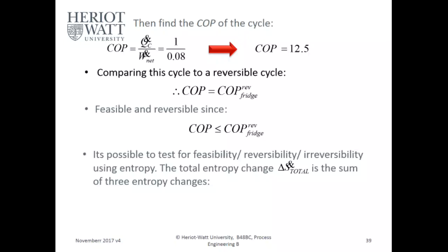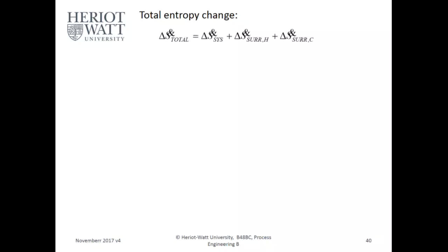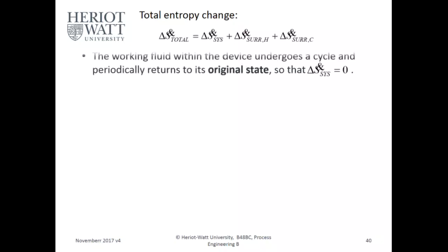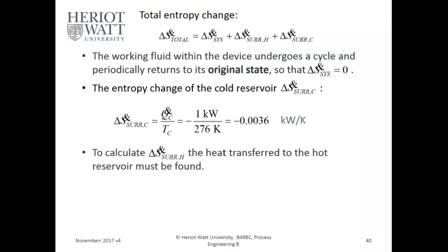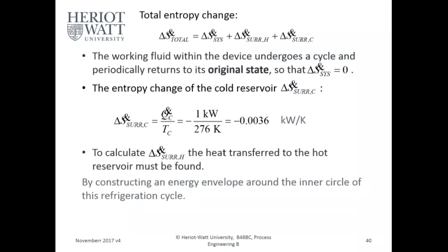We now confirm feasibility using entropy. Delta S_total is the sum of delta S of the system, the hot surroundings, and the cold surroundings. The working fluid undergoes a cycle, so delta S of the system equals zero. The entropy change of the cold reservoir = −Q_C / T_C = −1 kW / 276 K = −0.00362 kW/K.